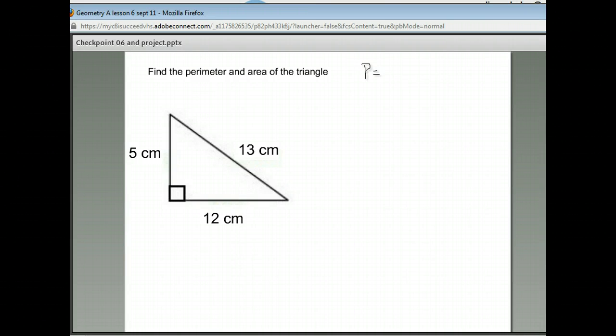Now we have a triangle. For a triangle, remember, for perimeter, you just add the sides together. Nothing fancy. So what would the perimeter of this triangle be? Perfect. 30 centimeters is also what I get. The area is one half the base times the height.